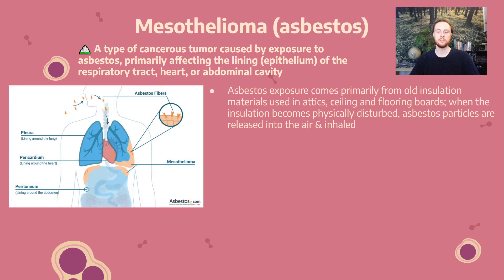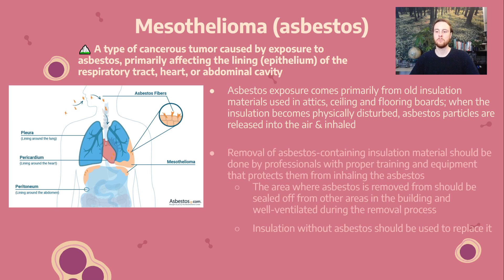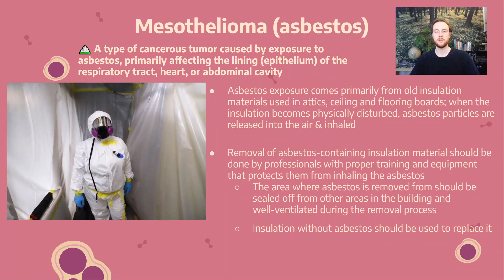Asbestos fibers that are inhaled target the pleura — the lining around the lungs — and can even target areas in the periosteum and thoracic cavity, leading to really problematic cancers in the epithelium of these surfaces. Removal of asbestos should be done by professionals wearing proper ventilated materials, including a respirator and mask to keep particles out of their eyes and lungs, and a bodysuit to prevent contact with skin or clothing. The area should be completely sealed off to prevent asbestos particles from entering other parts of the building, with good ventilation to route particles outside so they can disperse rather than build up inside.